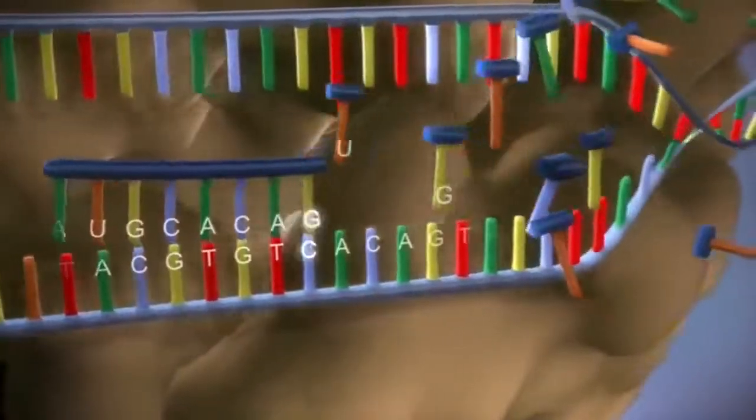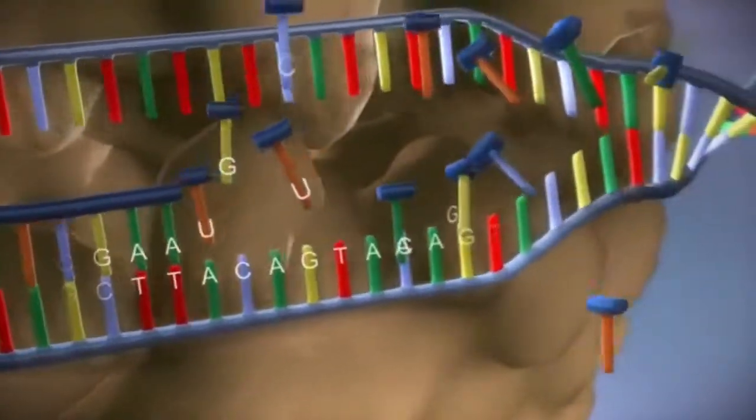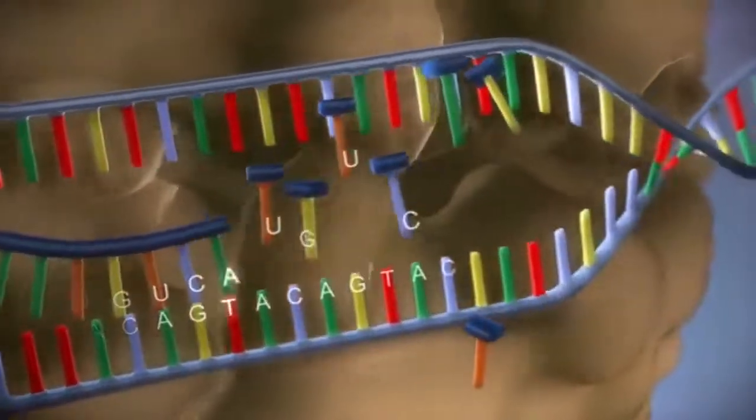The DNA code determines the order in which the free bases are added to the messenger RNA. This process is called transcription.